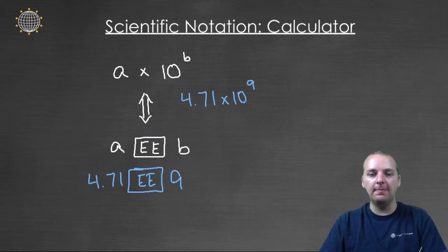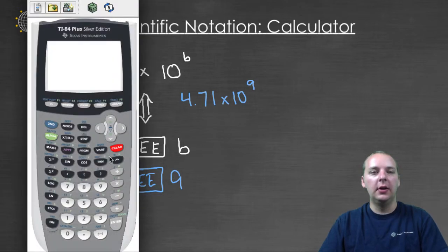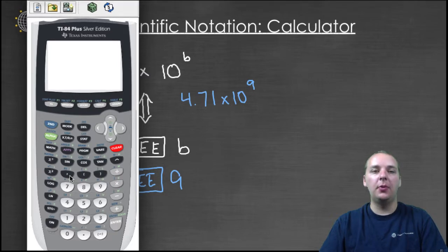So let's take a look at it. Let me pull up my calculator here. Now you'll find that button I was referring to right here, it's the secondary operation for the comma.